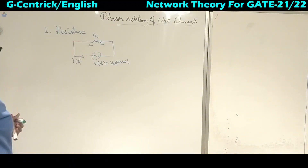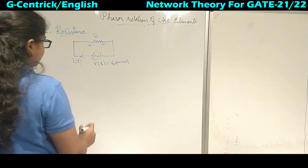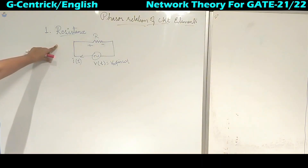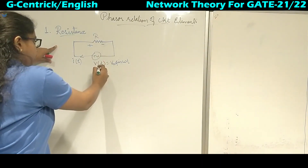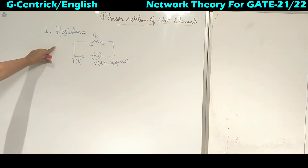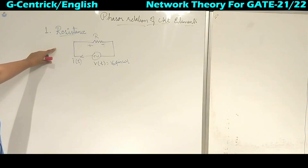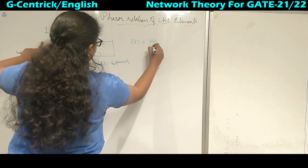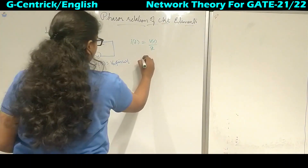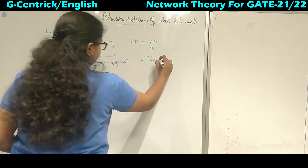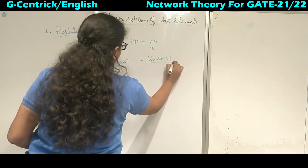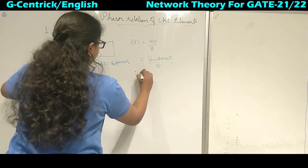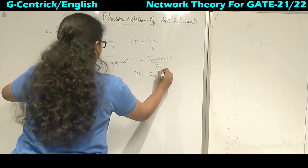We will start with the first one: resistance. In this resistance, we have taken a resistor of value R and given an AC voltage supply, that is V(t) = Vm sin ωt. The current across this resistor will be I(t) = V(t)/R, which is Vm sin ωt upon R, giving us Im sin ωt.